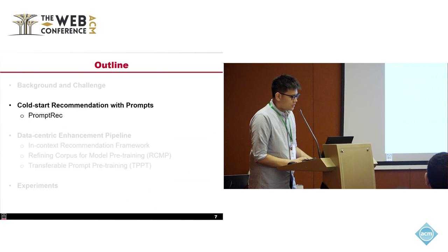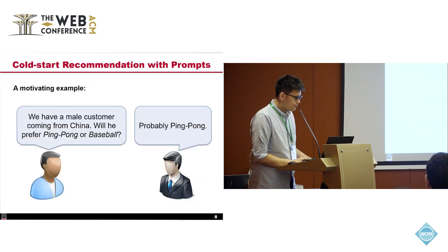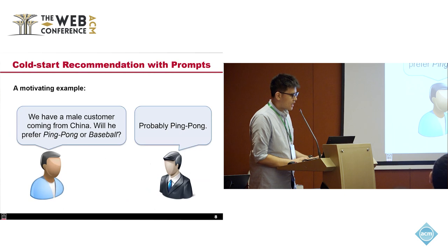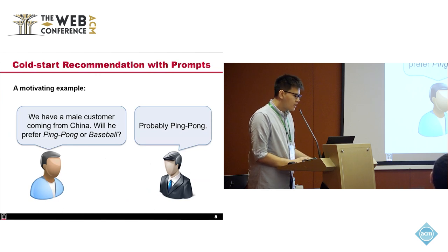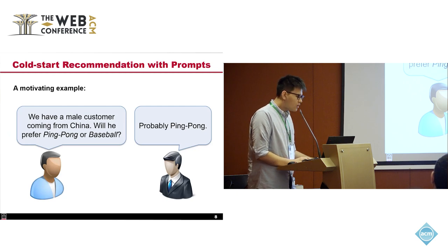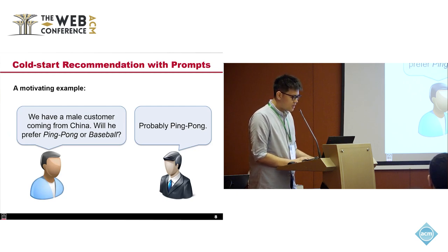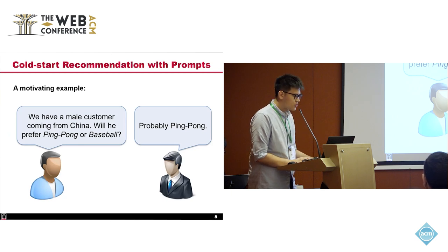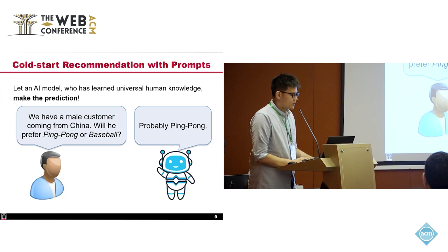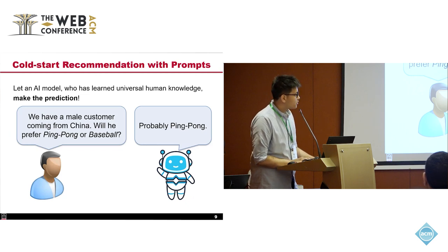Now we'd like to introduce our naive solution for this challenge. Consider this question: we have a male customer coming from China — will he prefer ping pong or baseball? Well, the man probably will guess ping pong. He can make this prediction because he can use his knowledge learned from this world. This example shows that universal knowledge helps humans make decisions in different domains, even without domain-specific training. To make the decision-making process automatic, we want an AI model to replace the human as the decision-maker. The premise is that such an AI model should have learned universal knowledge.